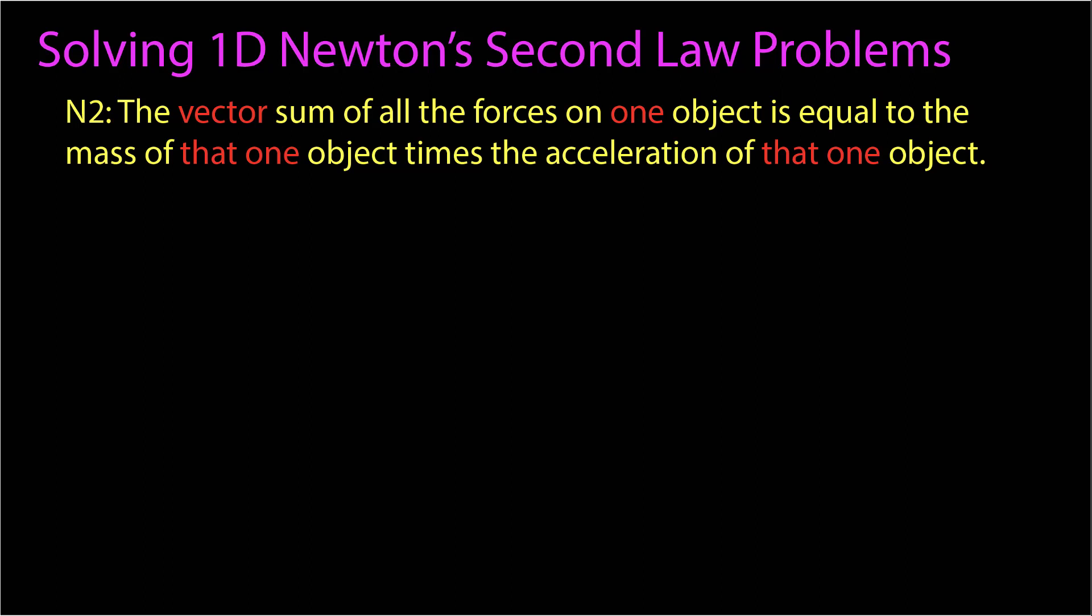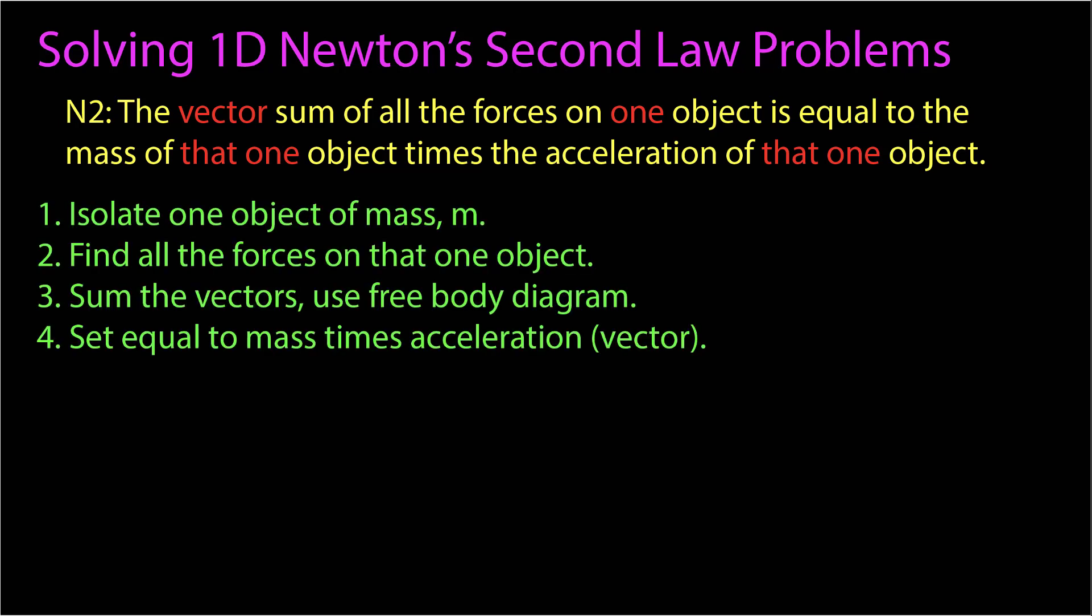We need a strategy to be able to apply this physics to help us solve them. It points us in this direction: first isolate one object of mass m, then find all the forces on that one object, sum those vectors, and we'll use a free body diagram to help us. And then set that sum equal to the mass times the acceleration, which is also a vector. Then we'll learn how to extract scalar relationships from that vector equation to solve the problem.